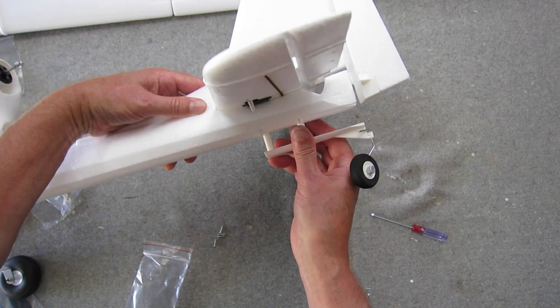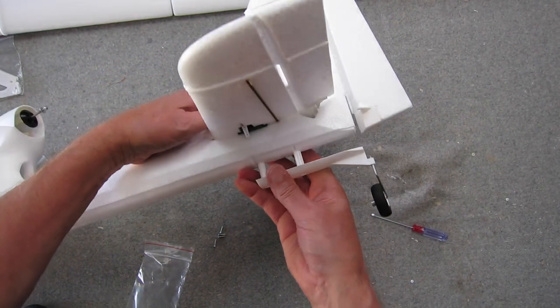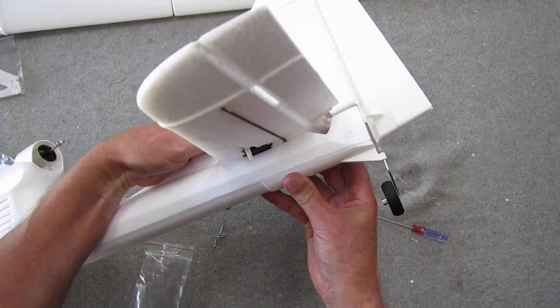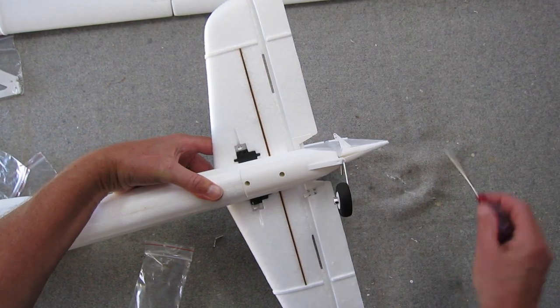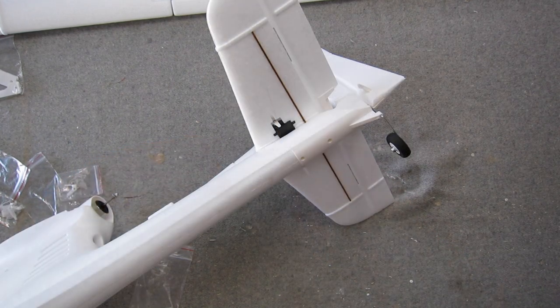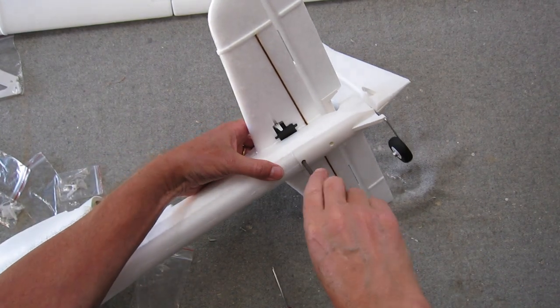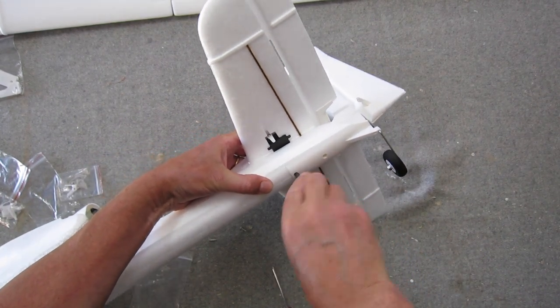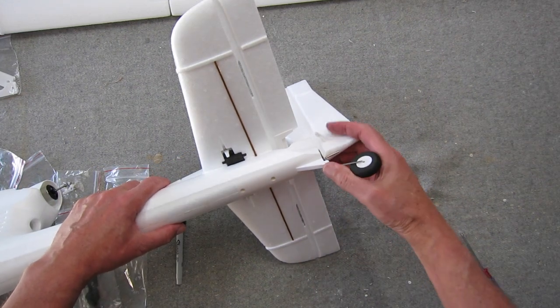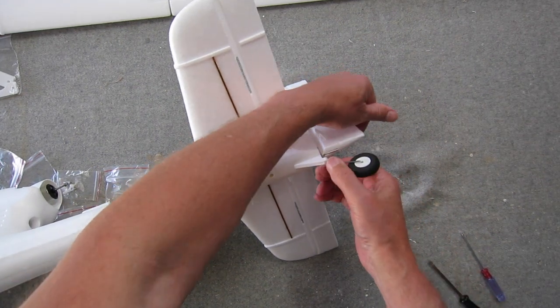Now fitting the tail wheel assembly, which holds the tail onto the fuselage as well. That's all held together with a couple of little screws. The screwdriver provided with the kit is actually a bit too small, so it's better to change for a bigger one for better results. And the steerable tail wheel just clicks into the little plastic bracket on the bottom of the rudder.